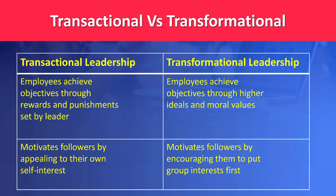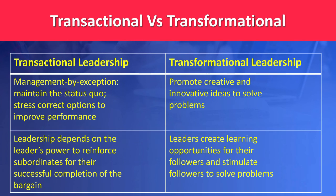In transactional leadership, leaders motivate followers by appealing to their own self-interest, whereas in transformational leadership, they motivate followers by encouraging them to put group interests first. Transactional management by exception maintains the status quo and stresses corrective action to improve performance, whereas the transformational system promotes creative and innovative ideas to solve problems — continually improving with more creative approaches rather than sticking to old methods.